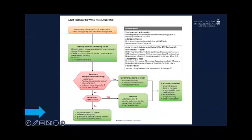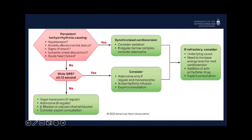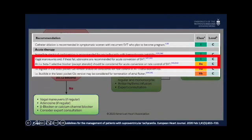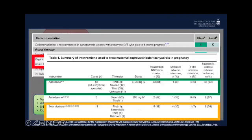If you have a persistent tachyarrhythmia that's not causing symptoms and you don't have a wide QRS, use vagal maneuvers, adenosine, beta blocker, and then expert consultation. The ESC guideline on supraventricular tachycardia gives class one evidence for vagal maneuvers and adenosine, and class two for beta blockers. A review showed adenosine has an 84% restoration rate versus 38% for beta blockers, and greater success with adverse outcomes — 63% versus 38%. So adenosine is preferred.